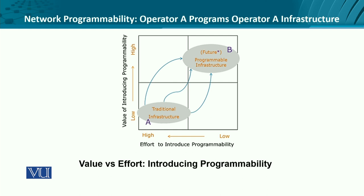Quadrant A represents more traditional infrastructure that can't be programmed much, so if we introduce programmability there, the overall benefit in terms of value is low. But in quadrant B, we are talking about future networks with highly programmable infrastructure. We need a high level of programmability and correspondingly a high level of value. Moving from traditional to future infrastructure will involve multiple pathways.